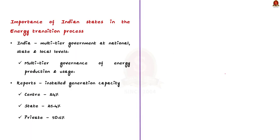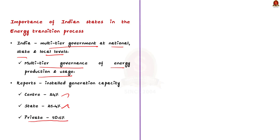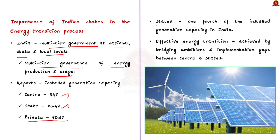Let us understand the importance of Indian states in the process of energy transition. The states are critical actors in India's energy transition. As we all know, India has a multi-tier government — at national level, state level and at local level — resulting in multi-tier governance of energy production and usage throughout India. As per recent reports, the installed electricity generation capacity of the center and states stood at 24% and 25.4% respectively, and the remaining 50.6% is with the private sector. From these facts, we can observe that the states contribute to one-fourth of the installed generation capacity in India. Therefore, an effective energy transition can be achieved by bridging the ambitions and implementation gaps between the center and the states.